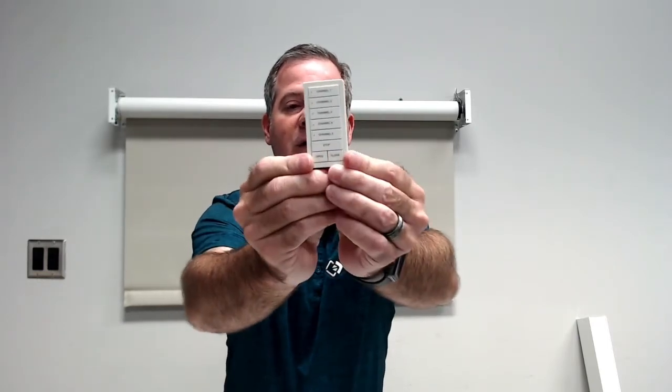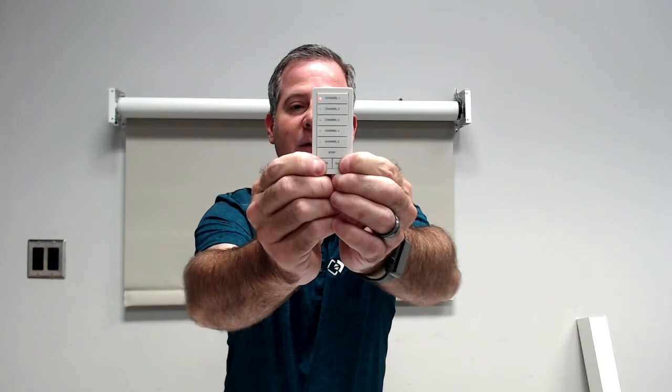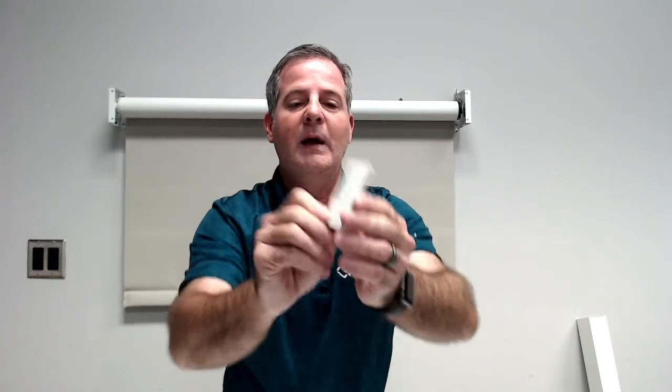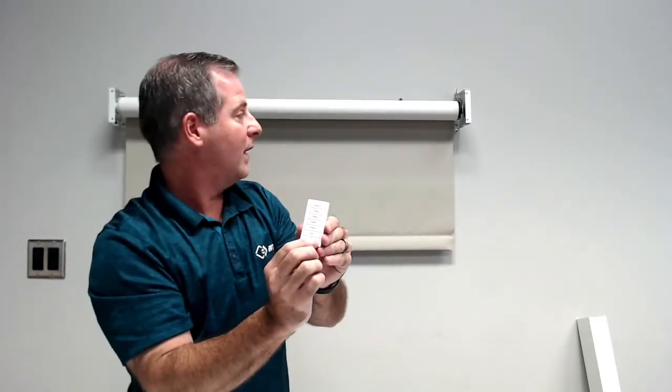Now the motor is in pairing mode. You would choose your wall switch, the channel you'd like to be on, channel one, the light's going to go on, and you're going to hold open and close, these bottom two buttons, at the same time with a slow flash. And now if we test it, it will work on channel number one.